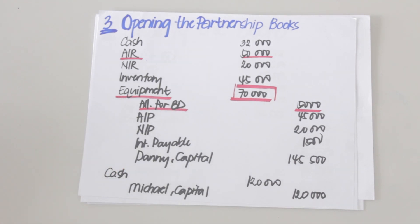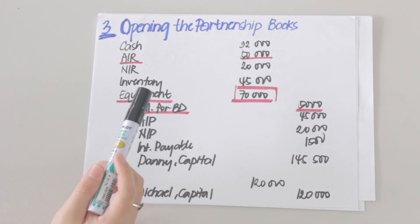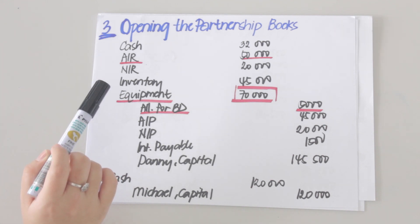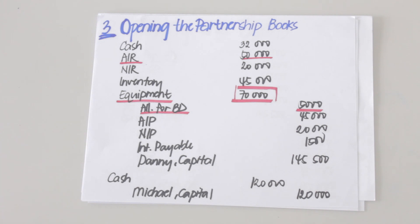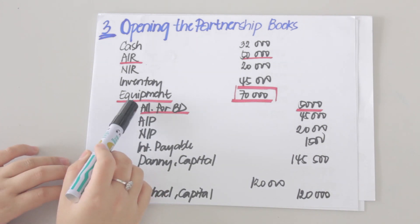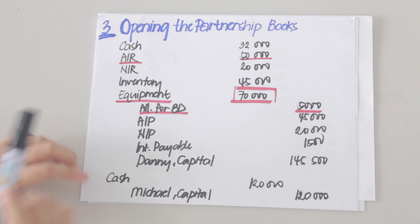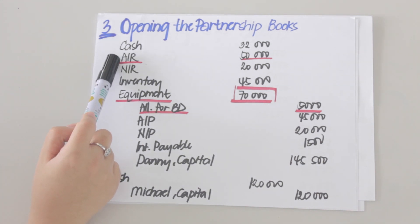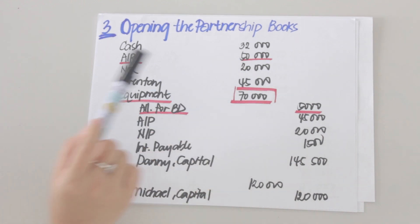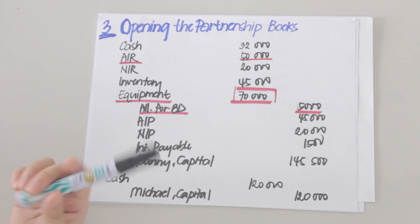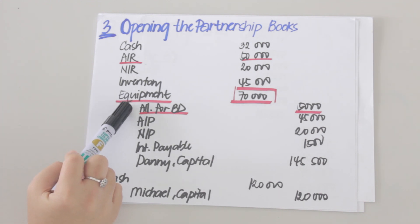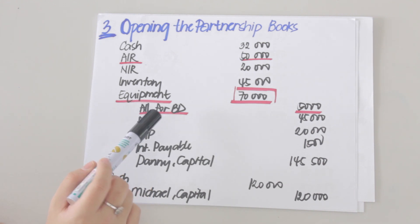Note that equipment and any property, plant, and equipment is carried net of accumulated depreciation — that is, at its carrying value. The accumulated depreciation account is not carried over and is not recorded when opening the partnership books. Accounts receivable, however, is recorded at its gross value of 50,000 — before deducting the allowance for bad debts. The allowance for bad debts account is carried over and is recorded when opening the partnership books.